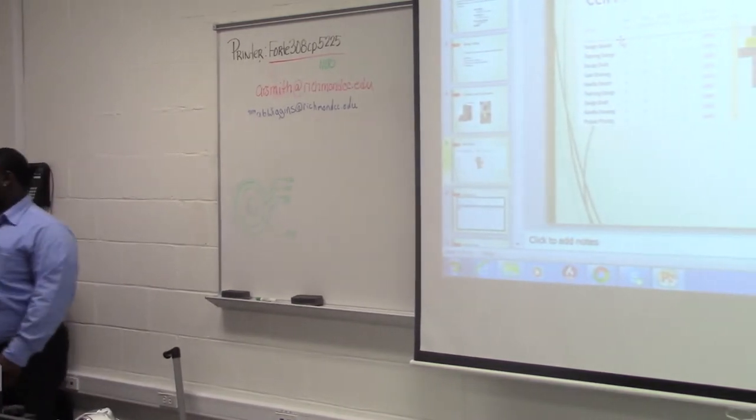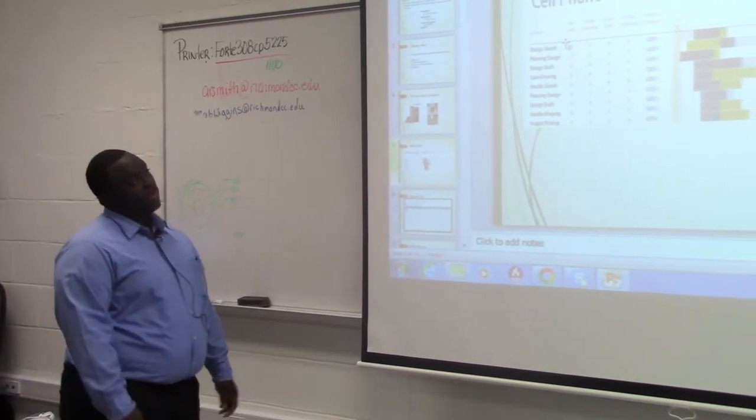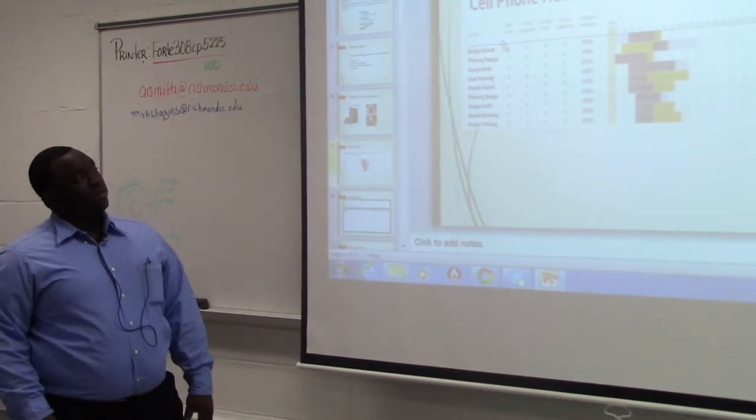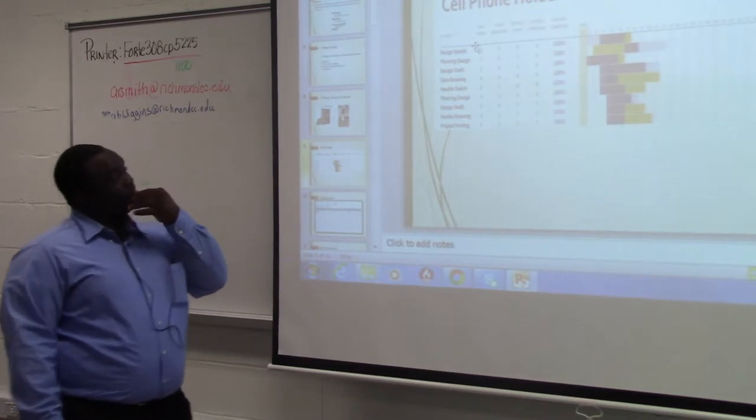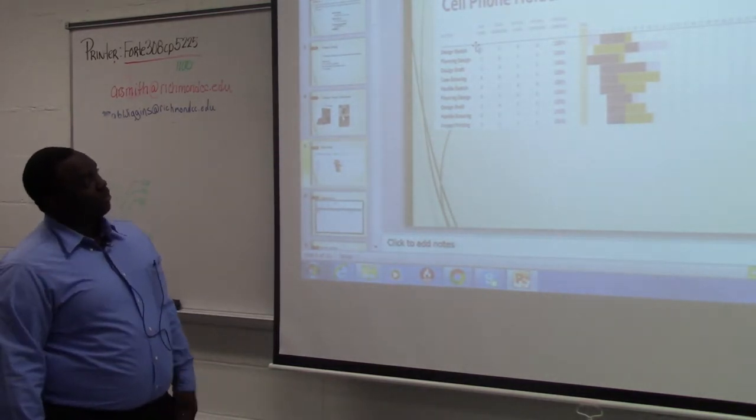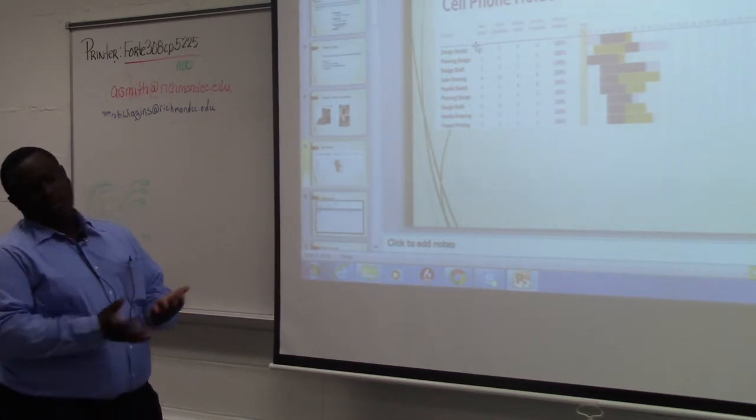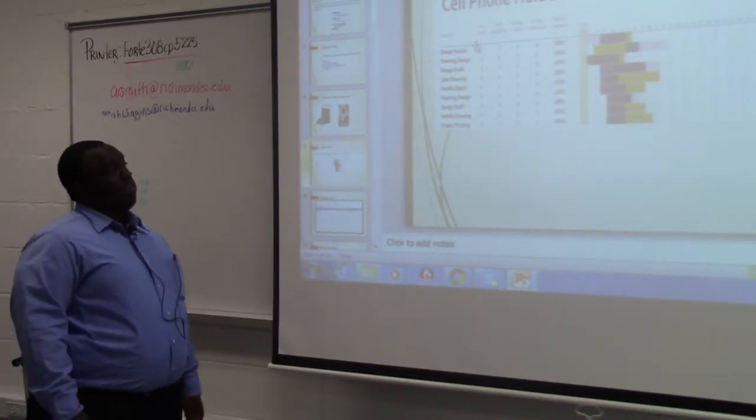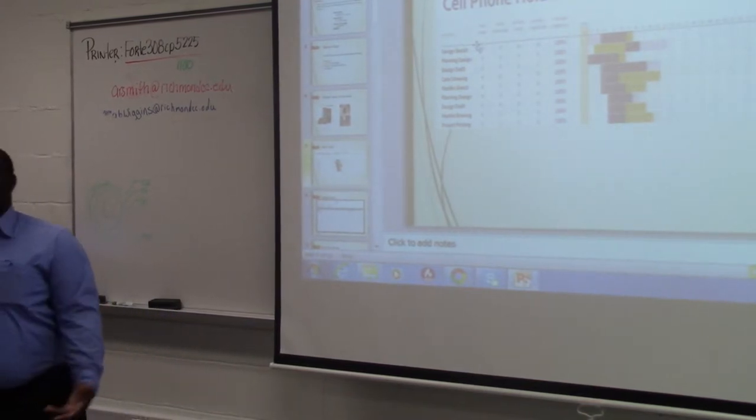This is my Gantt chart for my cell phone holder about how did I manage my time for the design. For the design sketch I completed all of that. The way I manage my time, I get enough time to finish all of it. For my design sketch I was in here brainstorming what I wanted to do and how I wanted to do it.